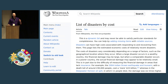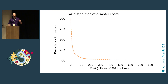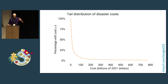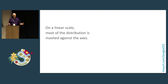Let me explain what I mean. I'm going to start with a small data set, which is a list of natural and human-made disasters from Wikipedia. I'm going to look at the distribution of the total cost of each disaster. If we plot on the x-axis the cost in billions of inflation-adjusted dollars, on the y-axis this is the tail distribution — that means the percentage of disasters that exceed a given threshold cost. If we look at this on a linear scale, all of the data is mashed up against the axes, which is always your warning that you are not visualizing something well.